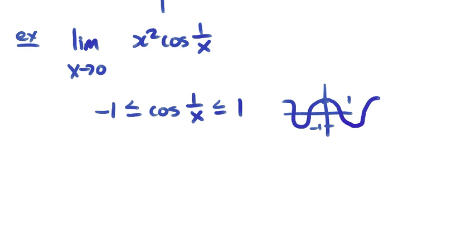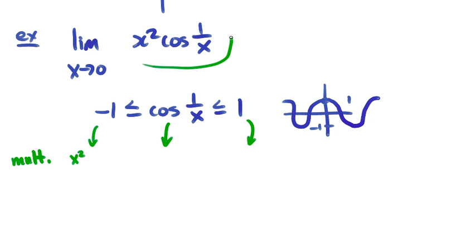We apply a little algebra trick to this and multiply everything by x squared. This will be negative x squared will be less than or equal to x squared cos(1/x), which will be less than or equal to x squared.